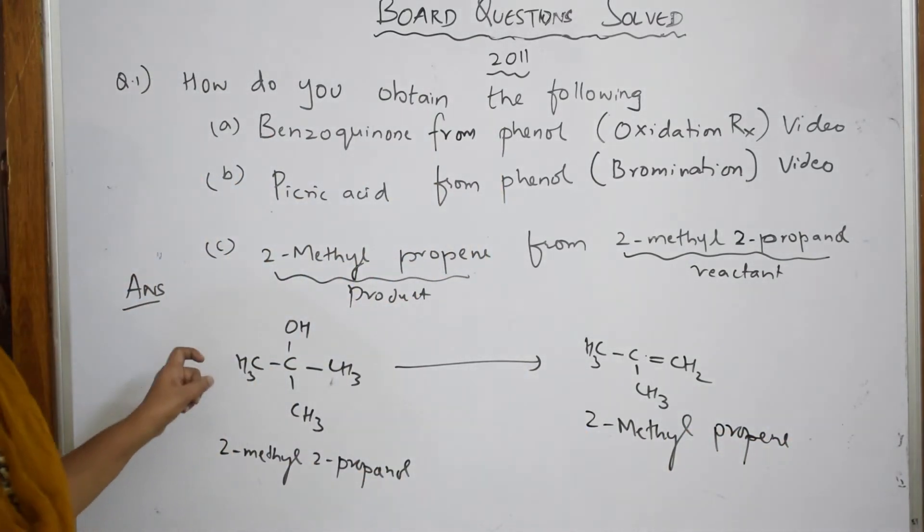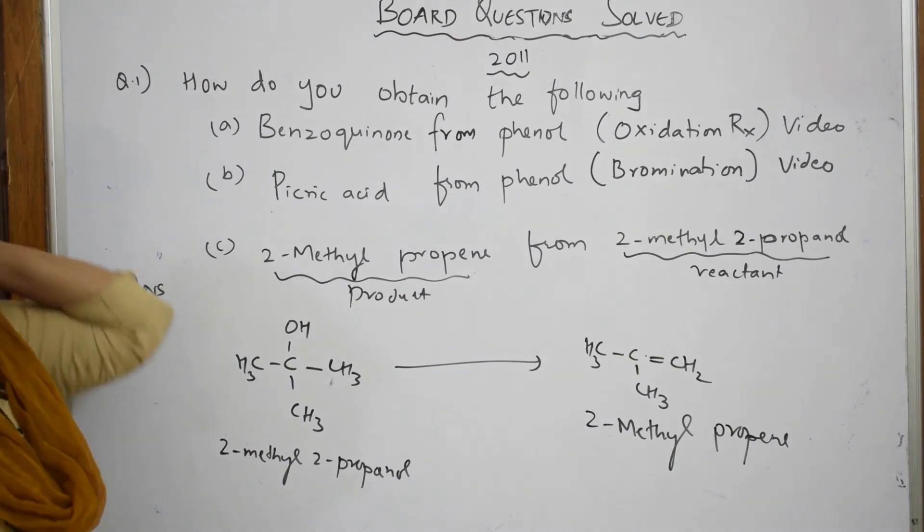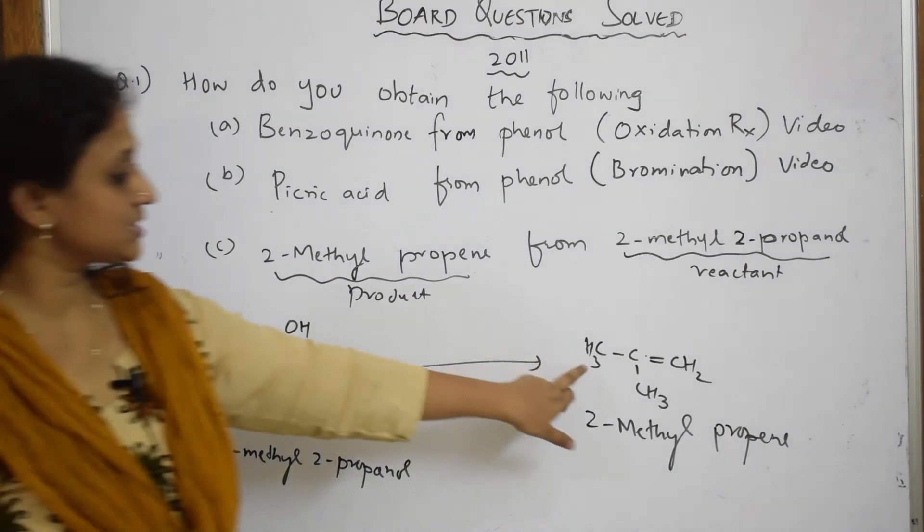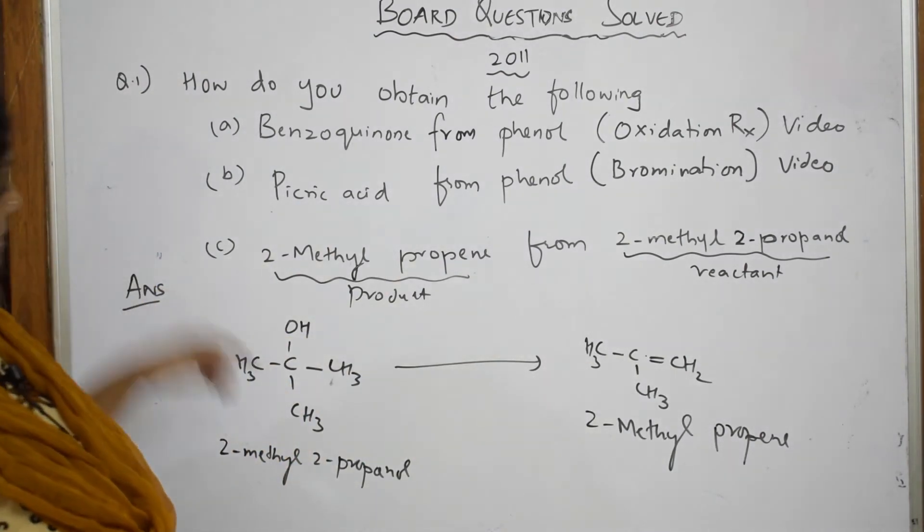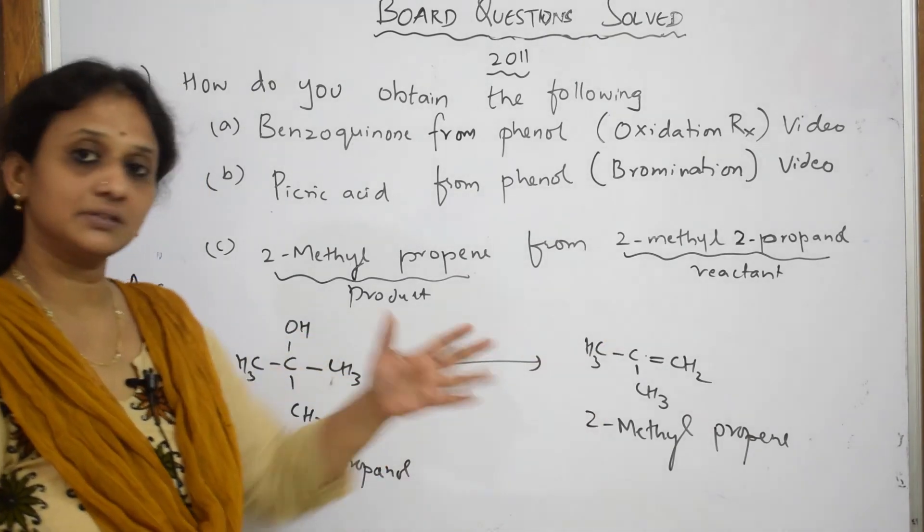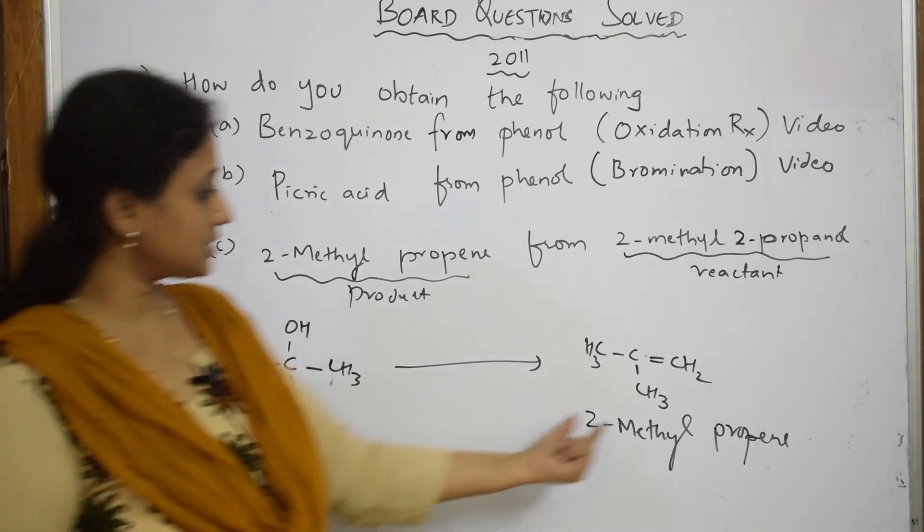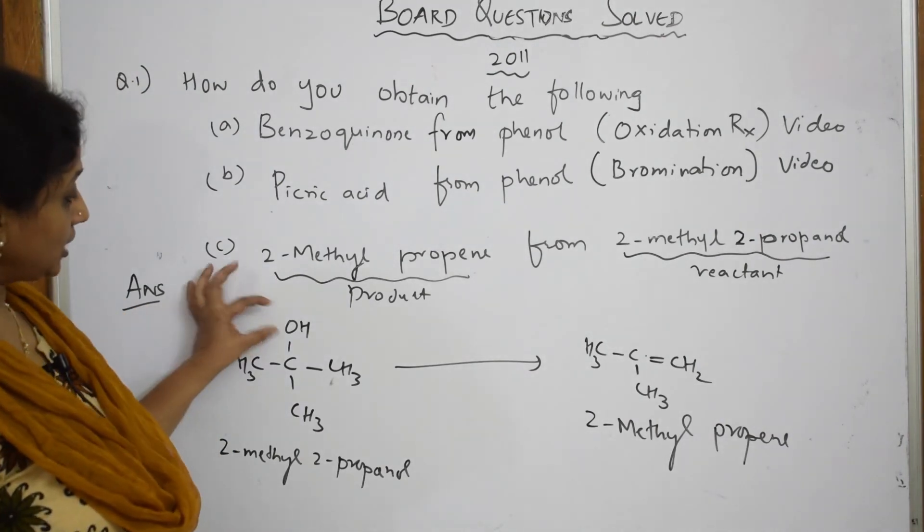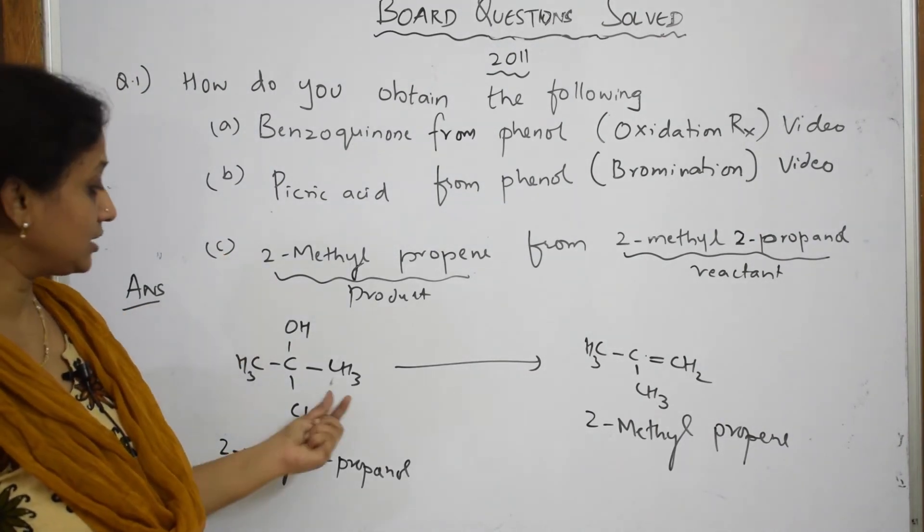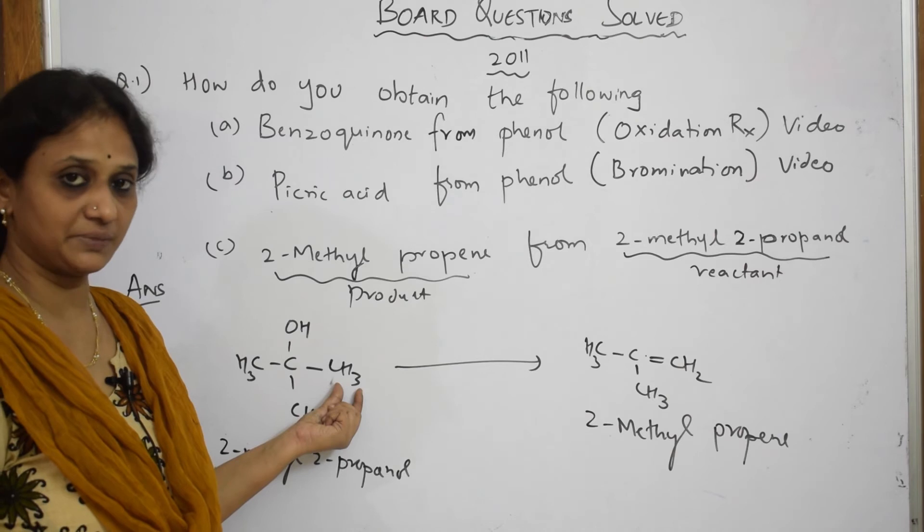Observe carefully. When I see this compound, what are you seeing? The CH3 group, the CH3 group, similar. This carbon, this carbon, similar. CH3, CH3, similar. But what is different? Here you have an alcoholic group and here you have your methyl group.